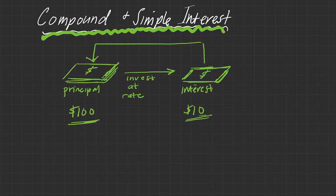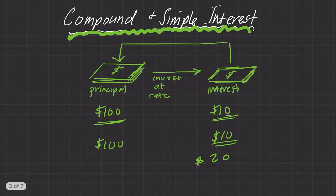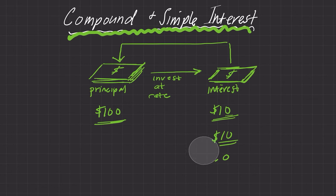So in the simple interest case, if you had $100 invested at 10%, after two years you'd have $120. You get $10 the first year, and then you still have the same principal, so you have another $10 the second year. Your total interest would be $20. You start with $100 — it's always starting at $100 — and you're just adding $10 for each year that passes.